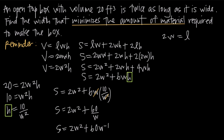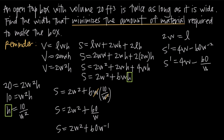Once you have the function in terms of one variable and simplified as much as possible, the next step is always to take the derivative. So our derivative is: S′ = 4w − 60w⁻², which we can also write as S′ = 4w − 60/w².